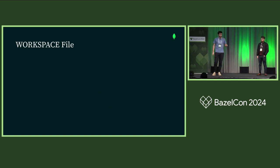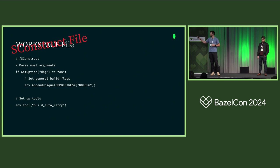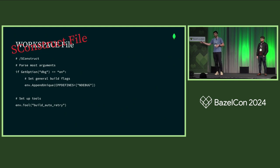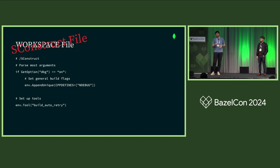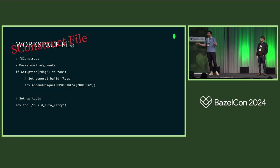Next, the SCons script file — there's one of these and it's at the root. This parses arguments. For example, you might take in a debug flag and pass NDEBUG to your CPP compile. Additionally, you'll set up some tools. These hook into the SCons build and do something special — they make our build ours. Here's one that will just retry any compile action that runs in CI, because if you run out of memory, it's usually not a real problem, so retrying is fine. So we have a retry tool.